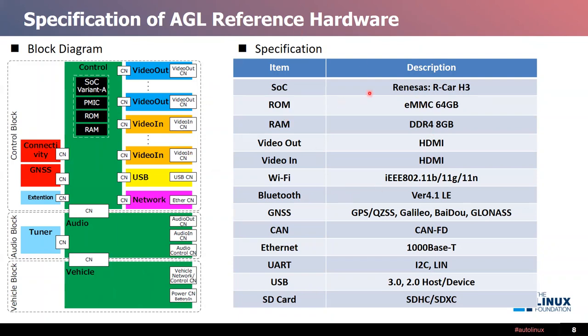Here is the specification of the full custom. Reference hardware features Renesas R-Car H3, 64GB ROM storage, 8GB RAM, and some external interfaces. This hardware can also support in-vehicle interfaces such as CAN and LIN.